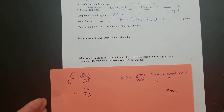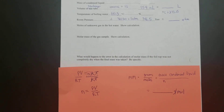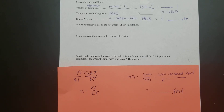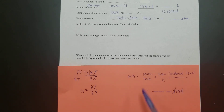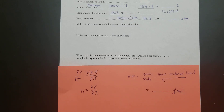The last question asks: what would happen to the error in the molar mass calculation if the foil top was not completely dry when the final mass was taken? In other words, if the Erlenmeyer flask was dipped too far into the boiling water and the foil top got wet, and it wasn't dried off — would that increase or decrease the final mass? How would that affect your molar mass calculation — would it appear higher or lower? Be specific. There is another video to help with the Part A calculations.